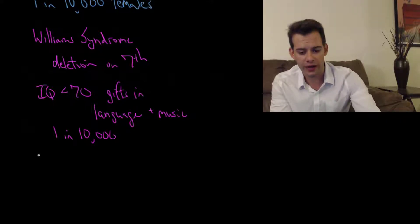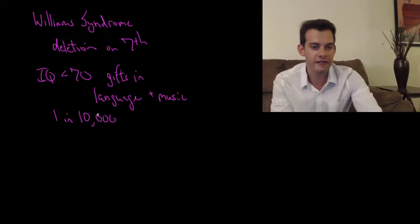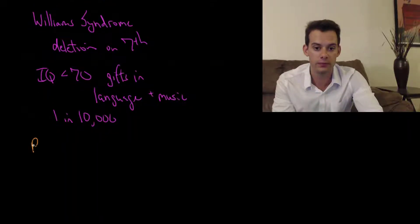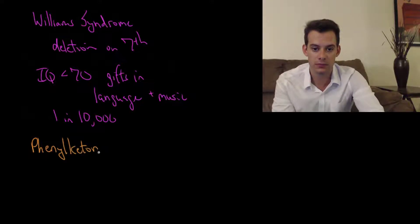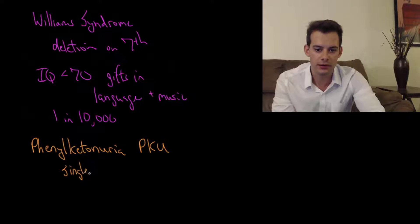And the last example that we'll look at is one that I mentioned in a previous video. And this is phenylketenuria or PKU. And I bring up PKU again because it's a good demonstration of a single gene influencing cognitive development.